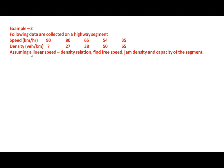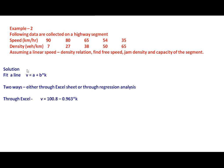In a second example, a field engineer collected speed and density data on a highway segment. Assuming a linear relationship between speed and density — that is, the Greenshields model — we need to find free flow speed, jam density and capacity. This can be done using Microsoft Excel or through regression analysis by fitting the line V = a + bK.